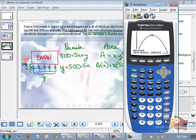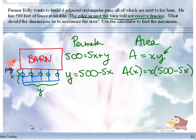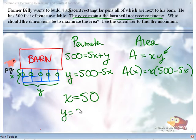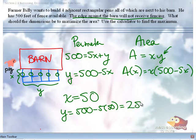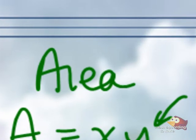So what dimension should the farmer use to maximize the area? We just found that x should be 50, which means y is 500 minus 5 times 50, which is what? Did you say 250? Okay, I think you said 150. Yep, 250.